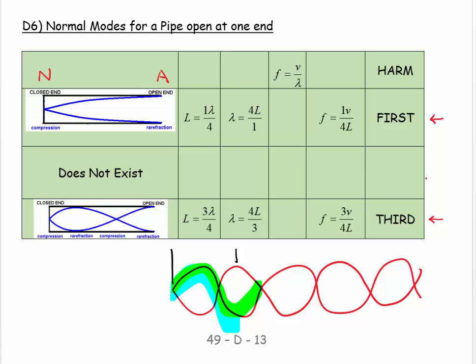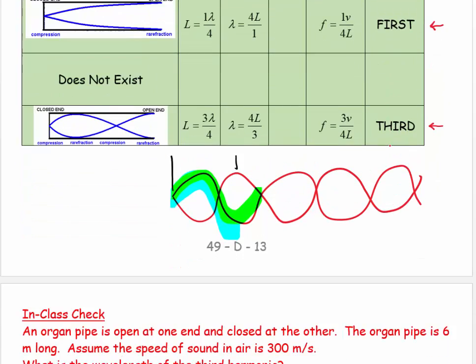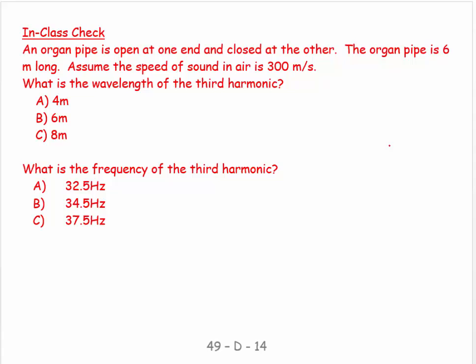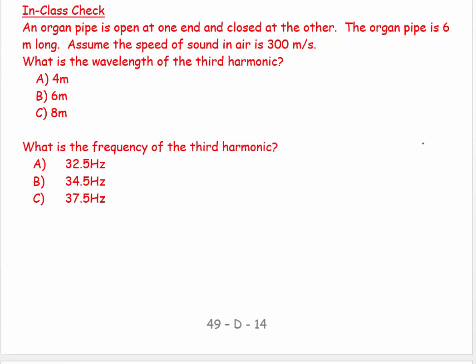Okay, so let's have a look at a question. An organ pipe is open at one end and closed at the other. The organ pipe is 6 meters long. Speed of sound is 300 meters per second in air. What's the wavelength of the third harmonic?